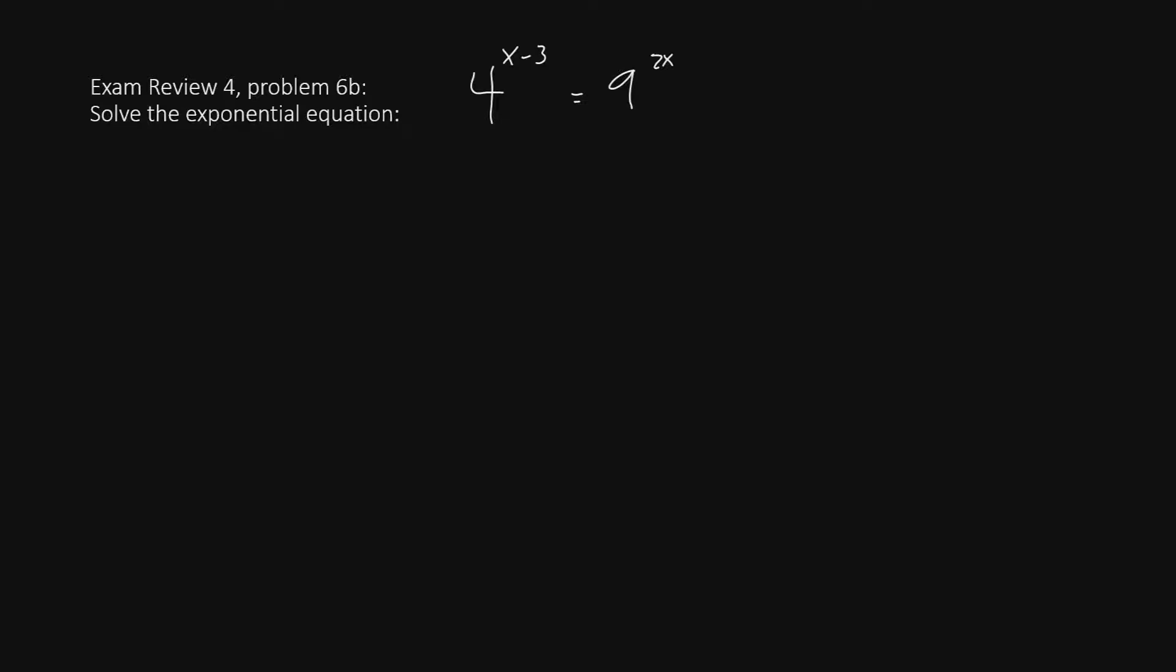Hello there once again. Welcome back to our Exam 4 review series. This time, we're doing problem 6b, where we are to solve this exponential equation: 4 raised to the x minus 3 equals 9 raised to the 2x.